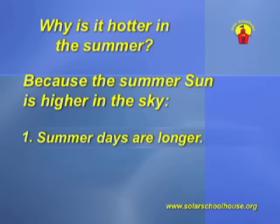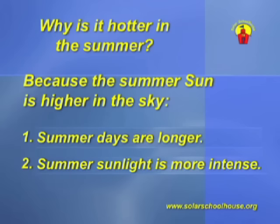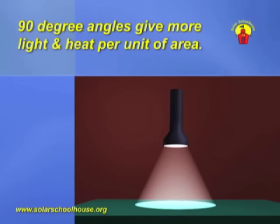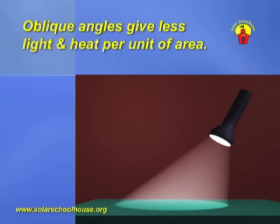To see why the summer sun is more intense, let's use a flashlight for a simple demonstration. In a darkened room, shine the flashlight on a flat surface at a direct 90-degree angle. Notice the size of the area lit by the light. Then angle the flashlight down to a less direct angle. The size of the lit area increases, but the intensity or brightness of it is reduced. The more direct 90-degree angle provides the most intense light.